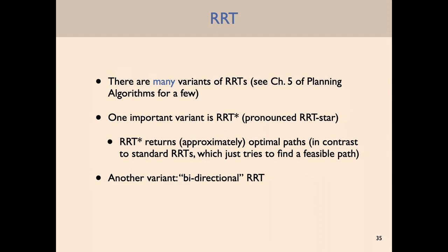RRT* returns approximately optimal paths — in contrast to the standard RRT that just gives a feasible path. Nowadays there are really good software libraries for implementing these algorithms. OMPL (the Open Motion Planning Library) has implementations of RRT*. It's approximately optimal because these algorithms have a random component — as you take more and more iterations, you get something that gets closer and closer to optimal under certain conditions. This is the basic vanilla RRT, but there are probably hundreds of variants.